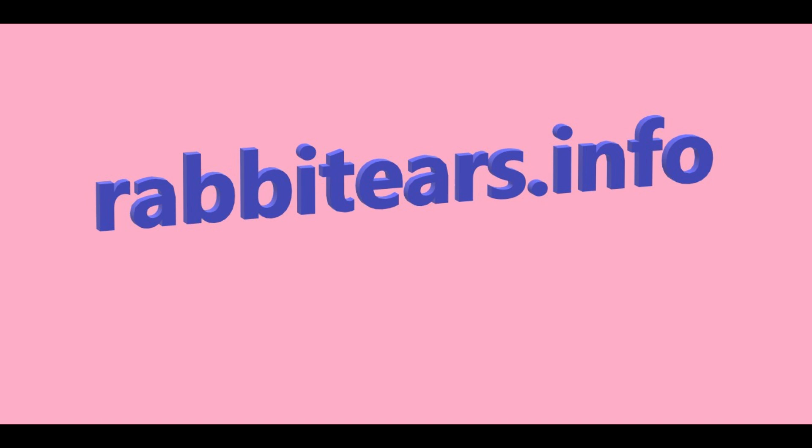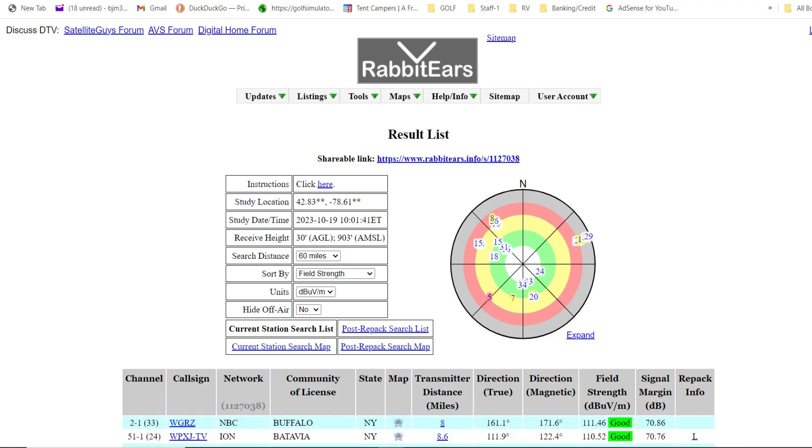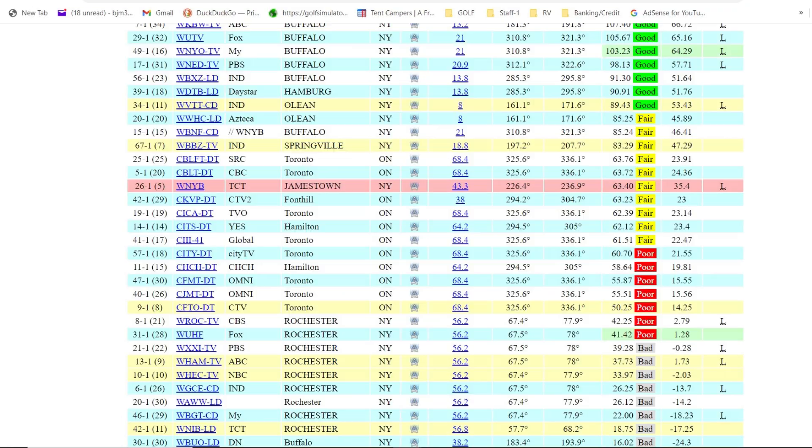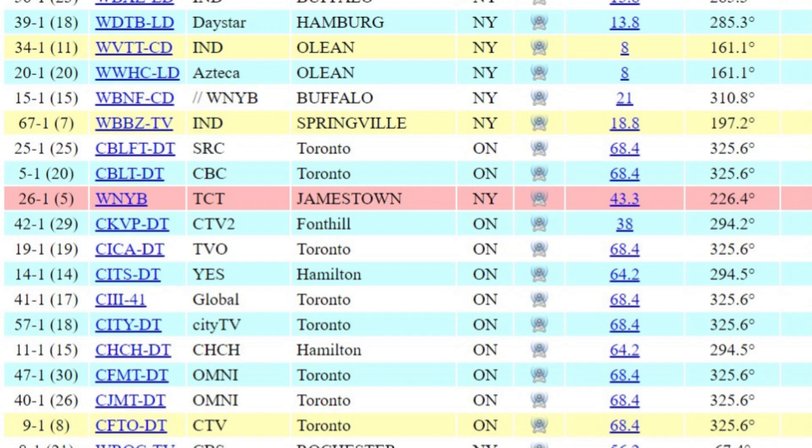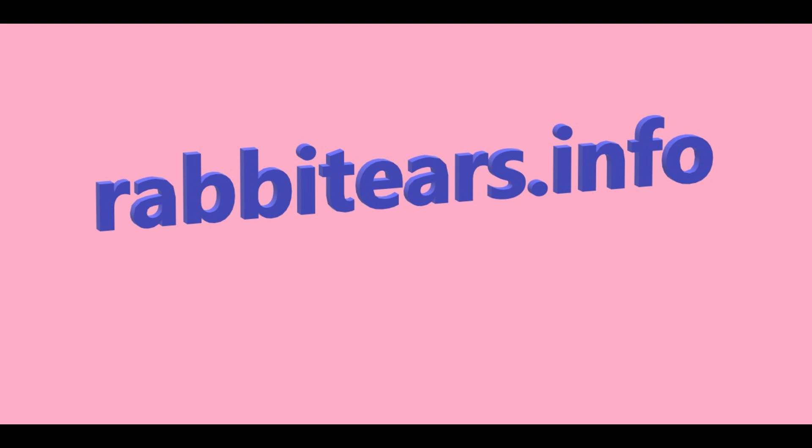I always recommend checking out the website rabbitears.info before deciding on an antenna design. There you can find out all sorts of easy-to-understand information, including all your available channels, transmitter signal strengths, location and direction, and much more. Yes, I have an episode that shows you how to navigate and use this great resource, and yes, I'll include a link to that too.